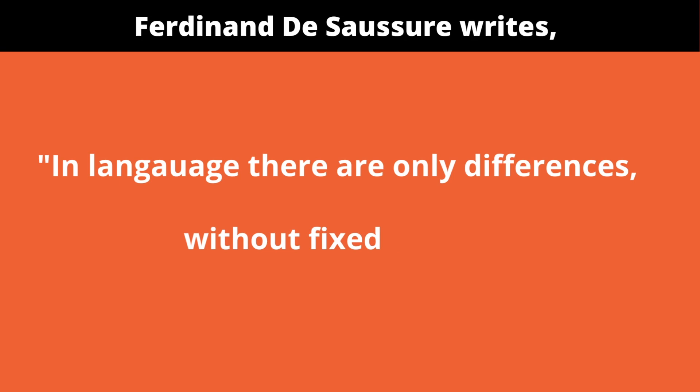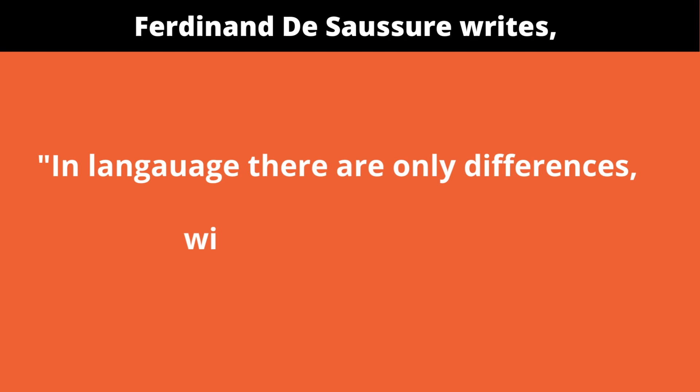Saussure himself says: in language there are only differences without fixed terms. For instance, the train called the Vandemataram Express — we are just putting a name on it. There is no fixed term; the name Vandemataram has nothing to do with the train itself. So Saussure says in language there are only differences without fixed terms, and this concept was further taken by the French structuralists in the 1950s and later translated into English and adopted by the wider population in Britain in the 1970s.